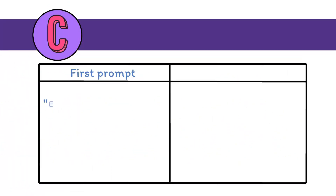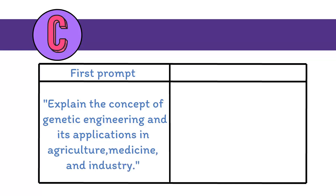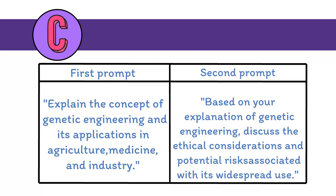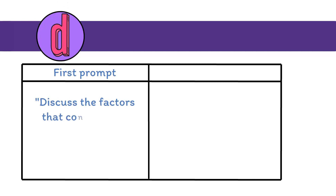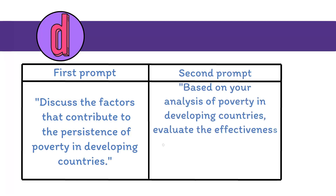C. First prompt: Explain the concept of genetic engineering and its applications in agriculture, medicine, and industry. Second prompt: Based on your explanation of genetic engineering, discuss the ethical considerations and potential risks associated with its widespread use. D. First prompt: Discuss the factors that contribute to the persistence of poverty in developing countries. Second prompt: Based on your analysis of poverty in developing countries, evaluate the effectiveness of various international aid and development strategies.